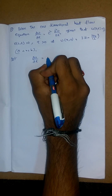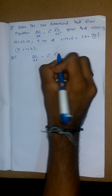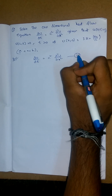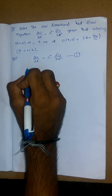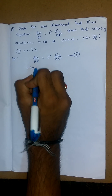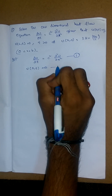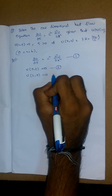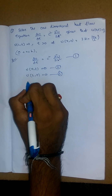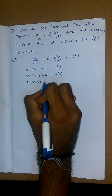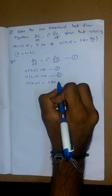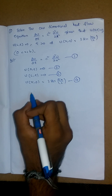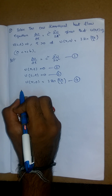Let us write the generalized equation: ∂u/∂t = c² ∂²u/∂x², call it equation (1). The boundary condition u(0,t) = 0 is equation (2), u(L,t) = 0 is equation (3), and u(x,0) = 3 sin(πx/L) is equation (4). These are the initial and boundary conditions.